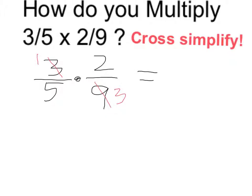Simply multiply top times top and bottom times bottom, which gives us 2/15.